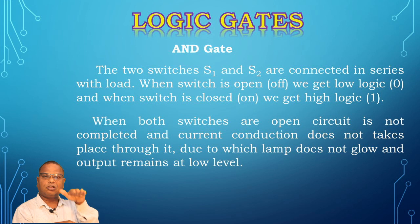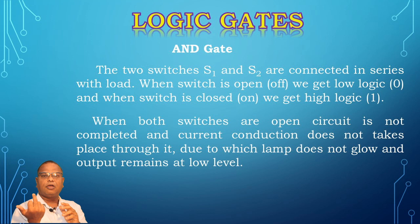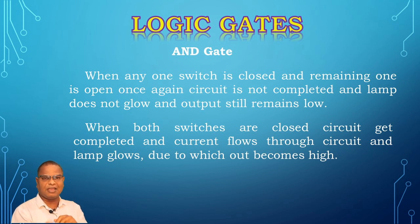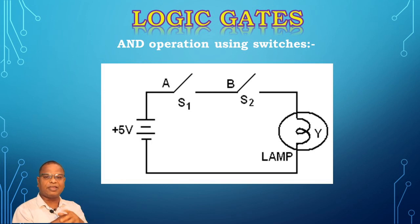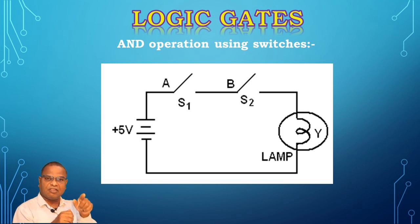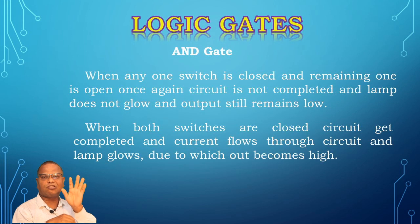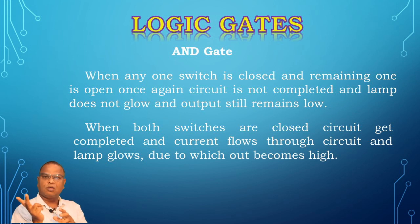When one of the inputs is high — when one of the switches is closed, either S1 or S2 — the circuit is still not completed. Current will not flow through the circuit and the lamp remains in off condition. Output still remains low, whether the input is 0-1 or 1-0.